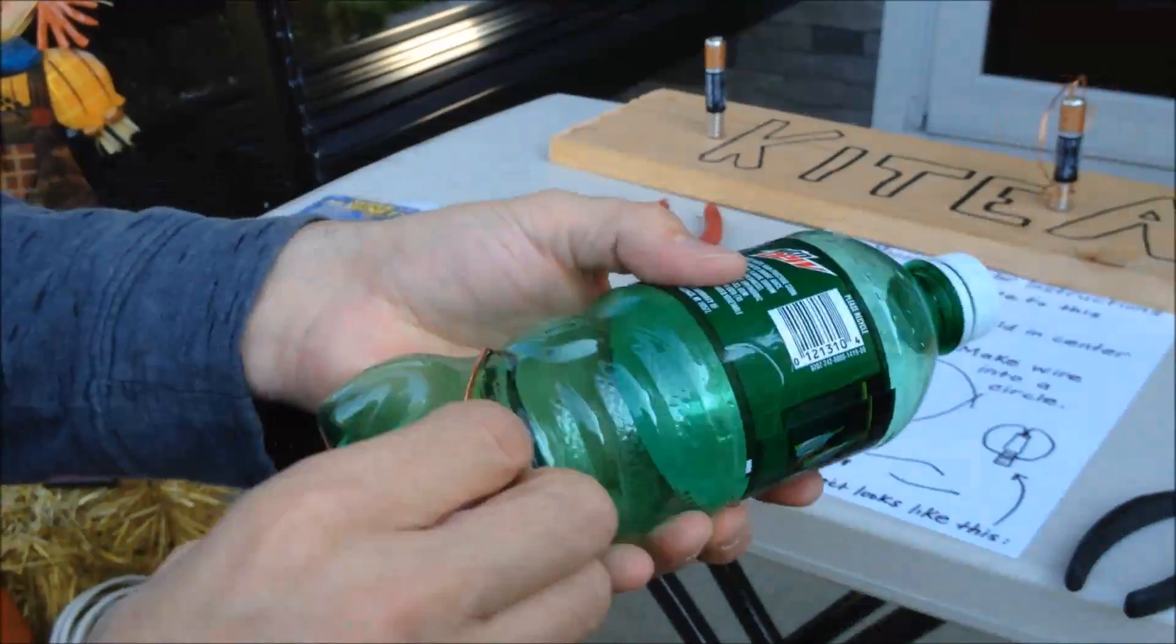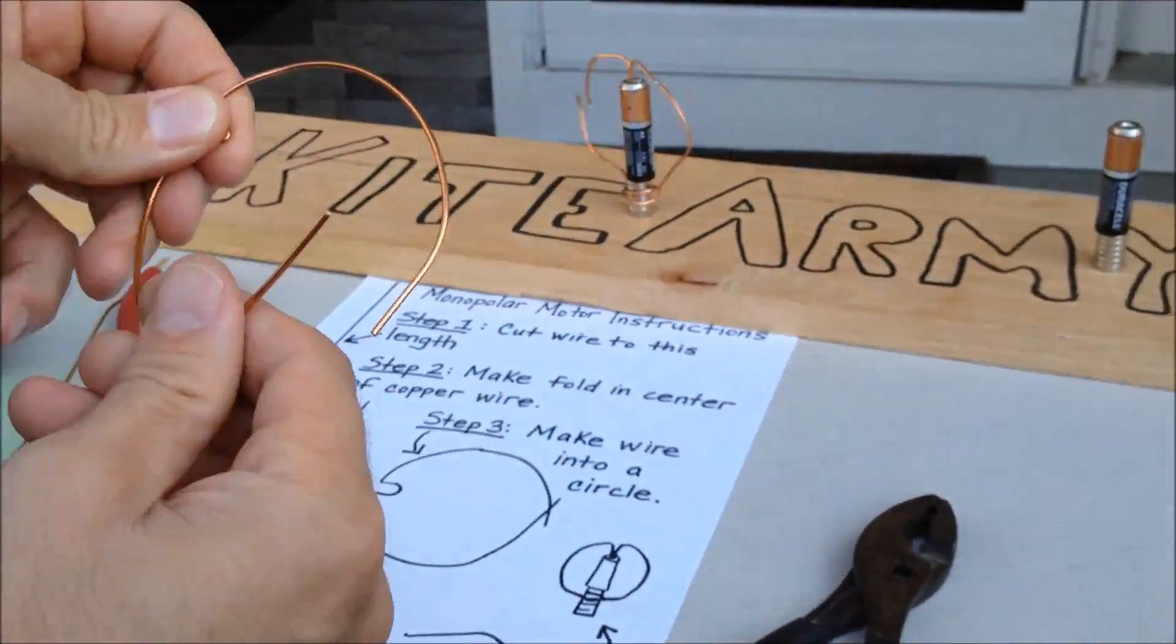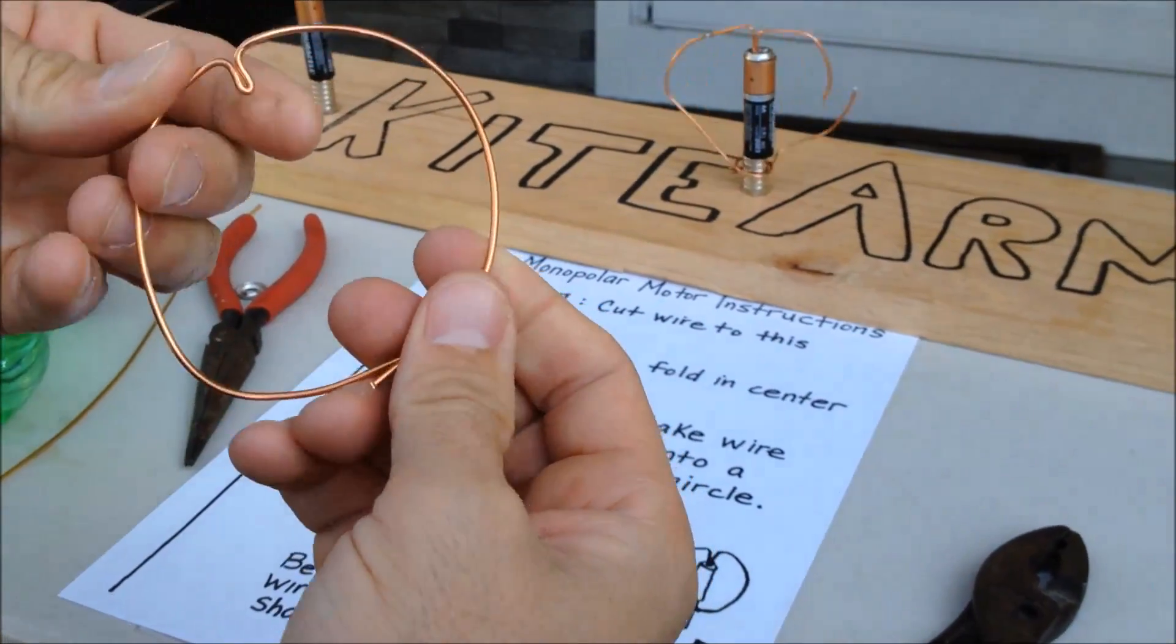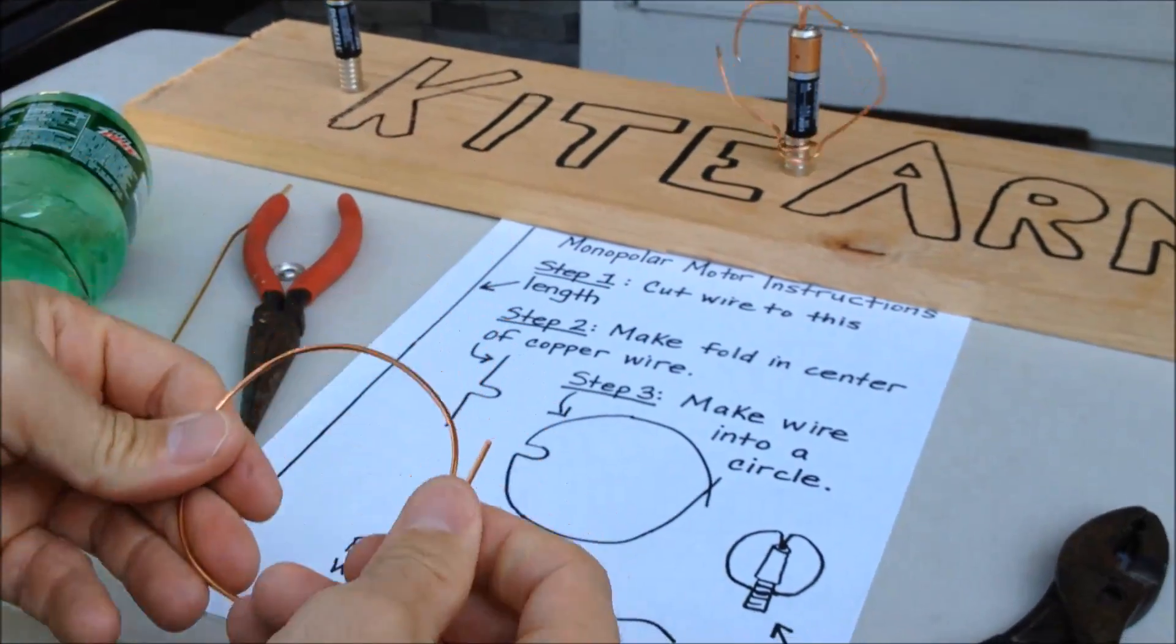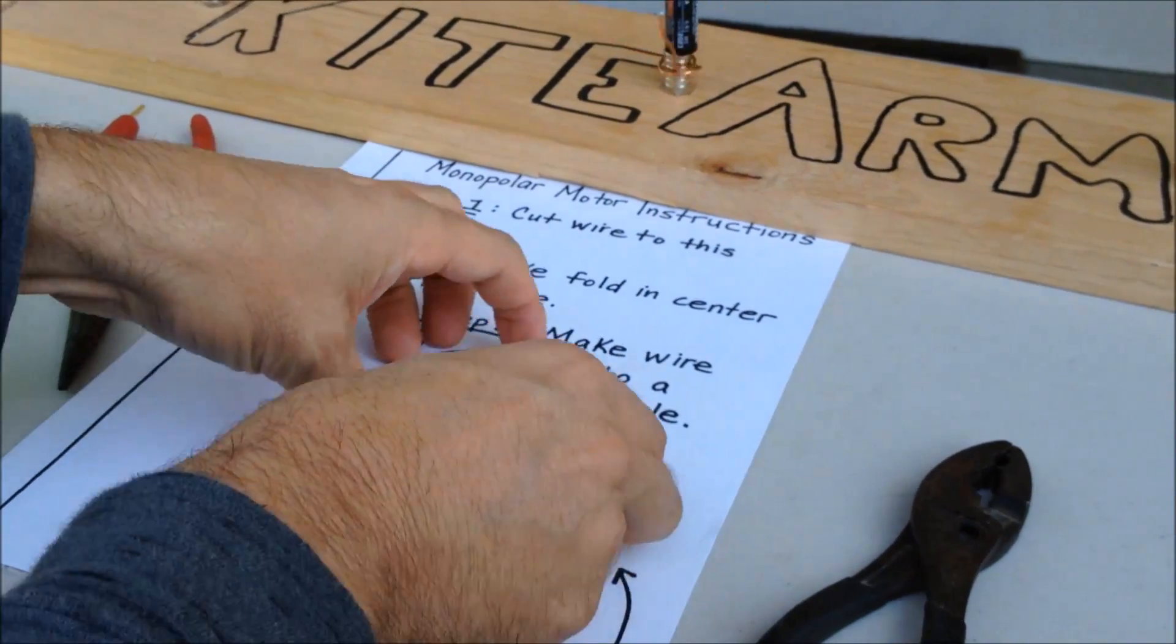Once you've got it wrapped around there, you've got the round shape give or take. You can kind of just play with it like that and that gets us to step three where we've got the pieces like that.